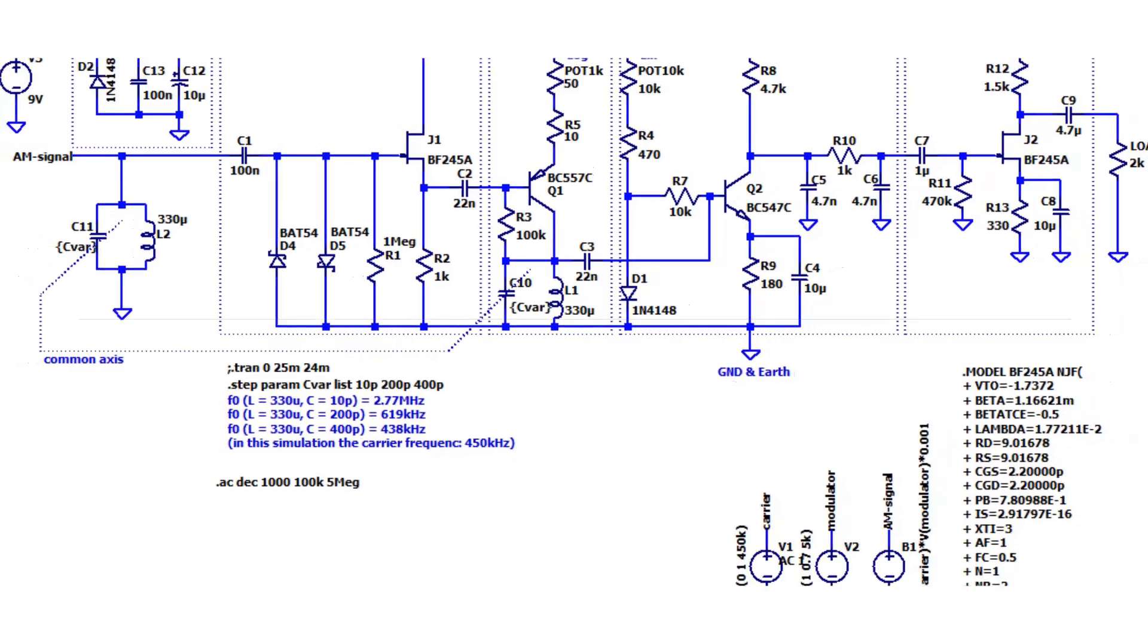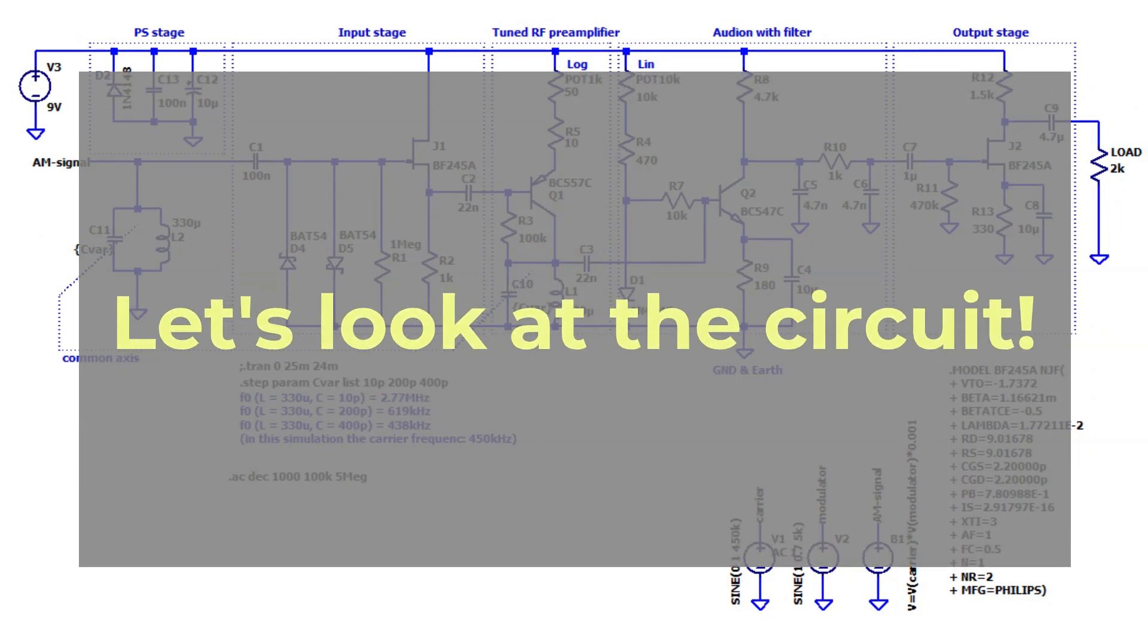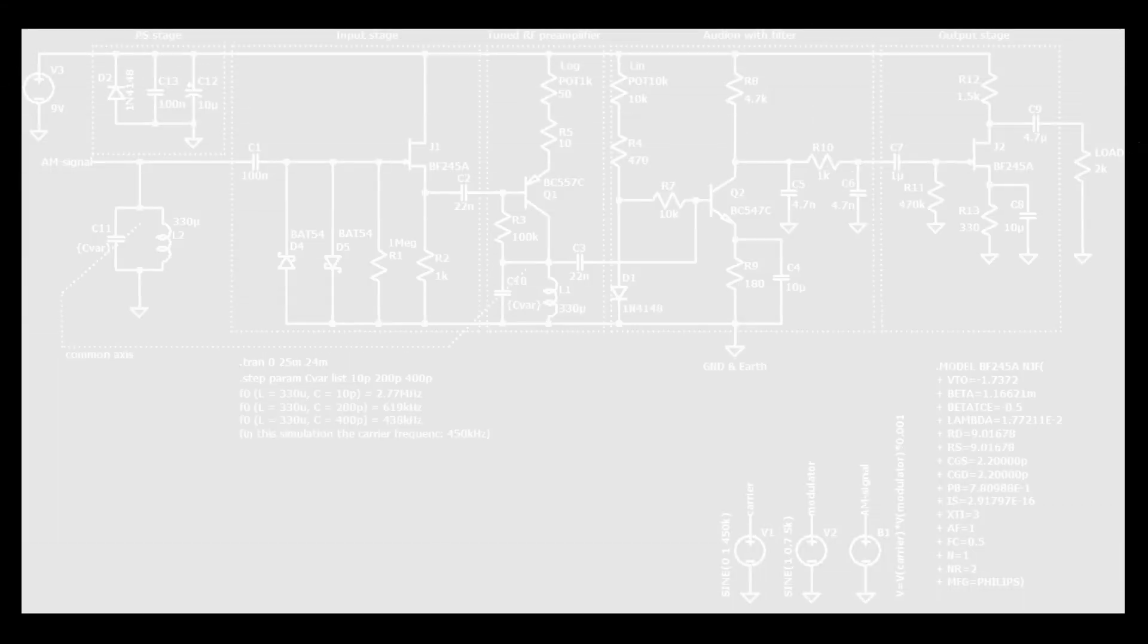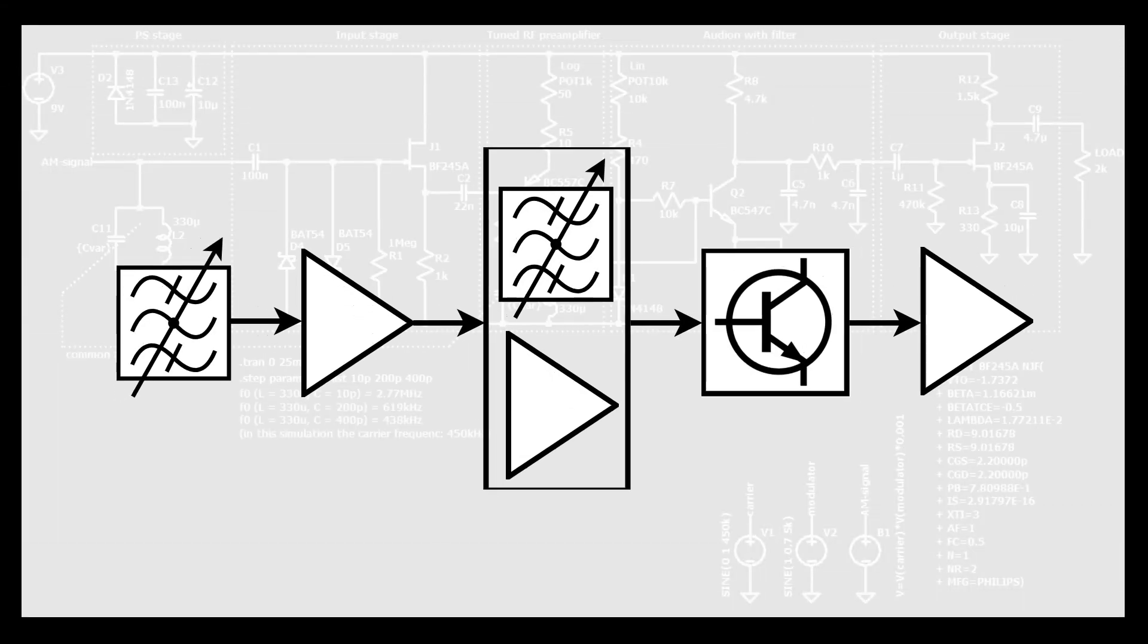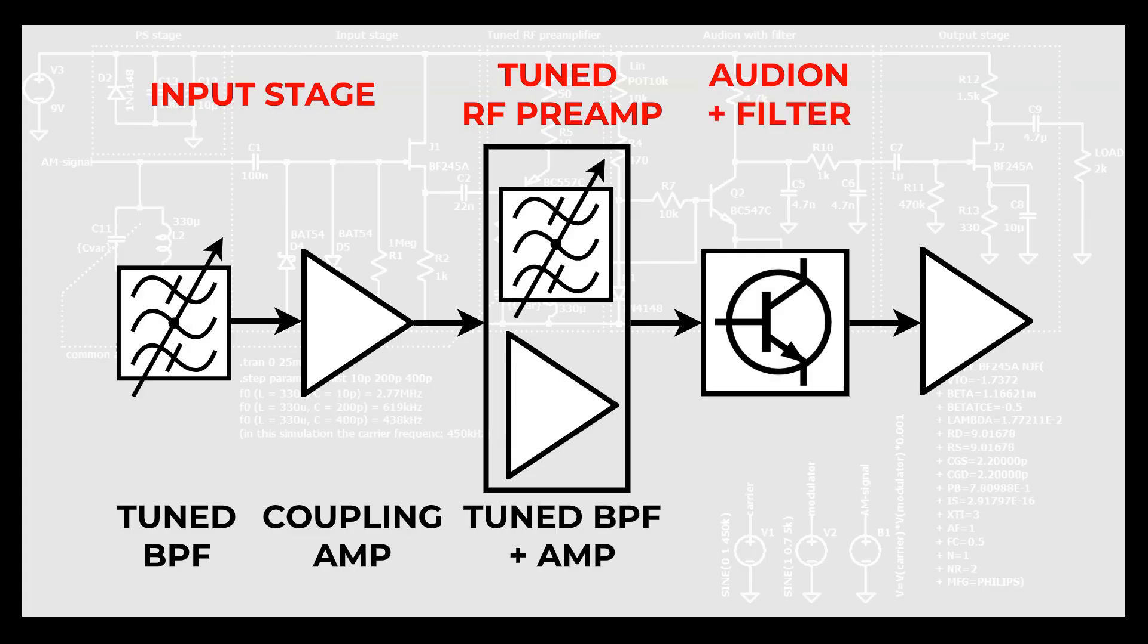It works well. Let's take a look at this circuit. The structure of this circuit is simple. The input stage contains a bandpass filter and a coupling amplifier. The tuned RF preamplifier also contains a bandpass filter and a preamplifier stage. The third section is the audio detector. And the last section is an amplifier for a high impedance speaker.